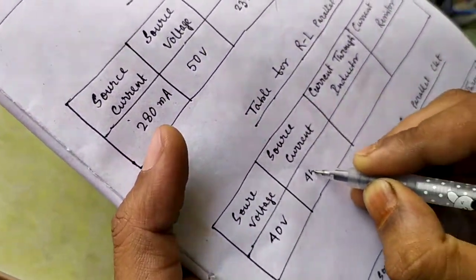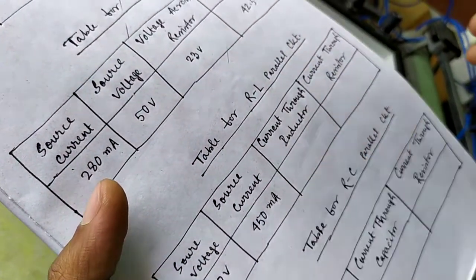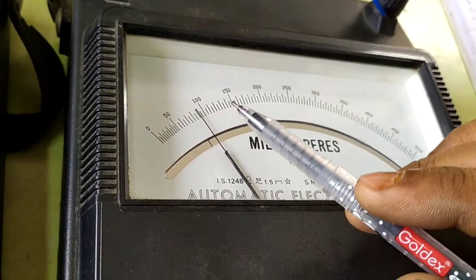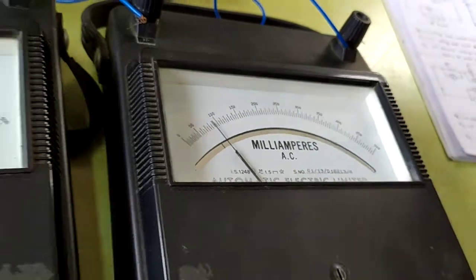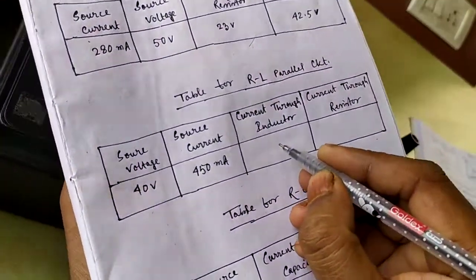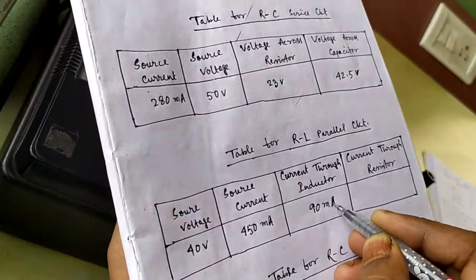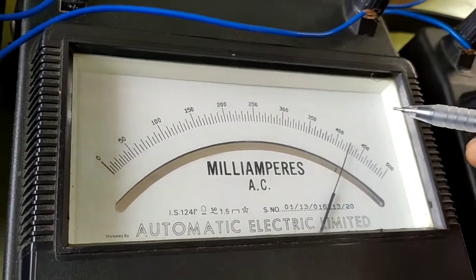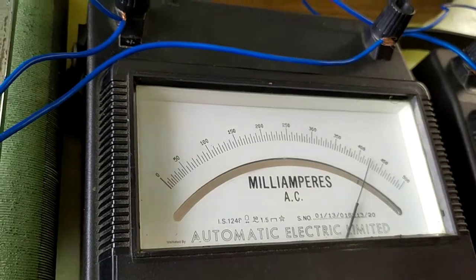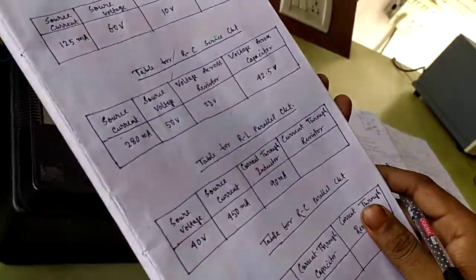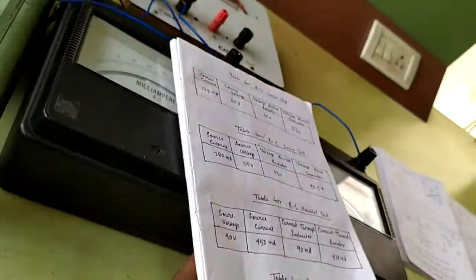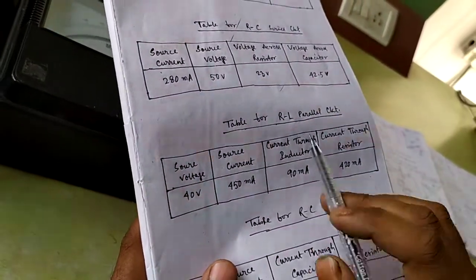The inductor ammeter reads approximately 90 milliamperes for inductor current. The resistor current reads approximately 420 milliamperes. These are the observations for the RL parallel circuit.